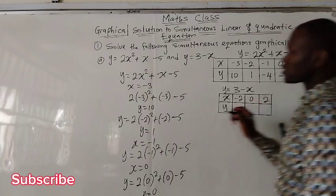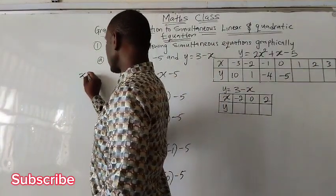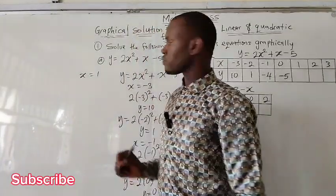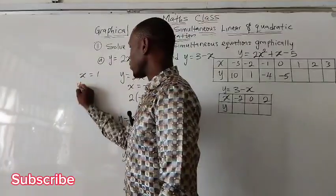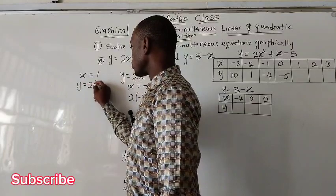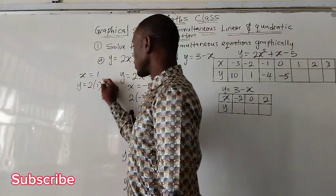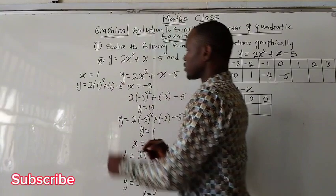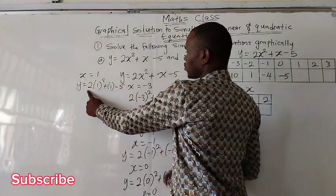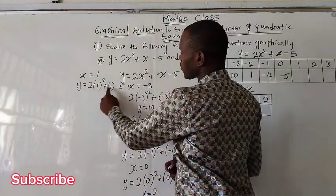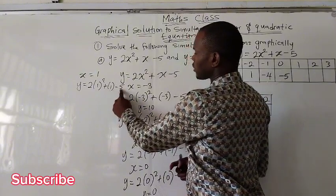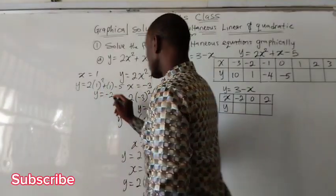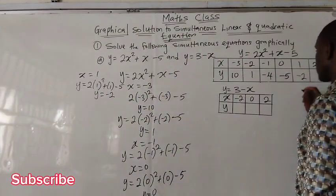For positive 1, when x is positive 1, we substitute and get y equal to 2 times 1 squared plus 1 minus 5. 1 squared is 1 times 2 gives 2; 2 plus 1 is 3; 3 minus 5 is negative 2. So y is negative 2.